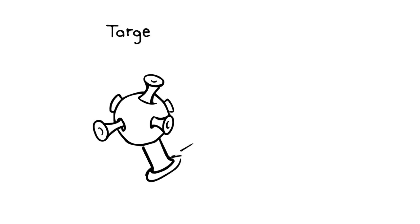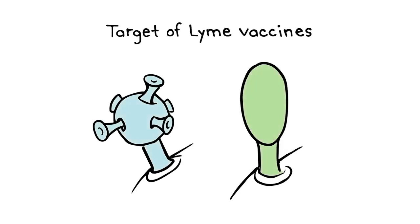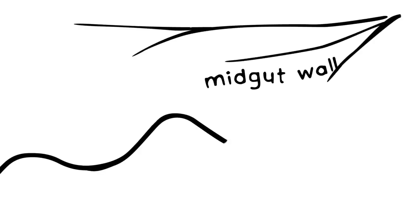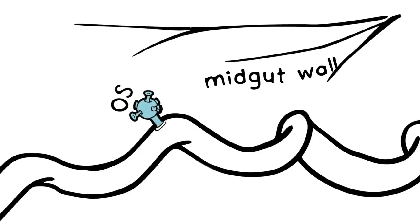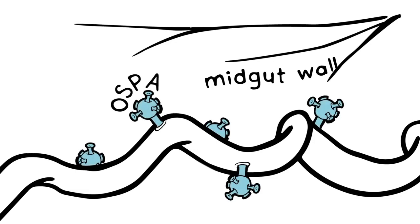Two OSPs in particular are the target of Lyme vaccines: OSP-A and OSP-C. In the midgut of the tick, OSP-A is abundant on the surface of the bacteria. It helps the bacteria adhere to this part of the gut.